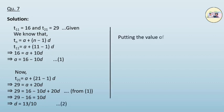Putting the values of d in equation 1, we get a is equal to 16 minus 10 into 13 by 10 equals 3.